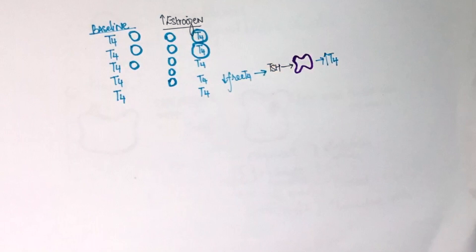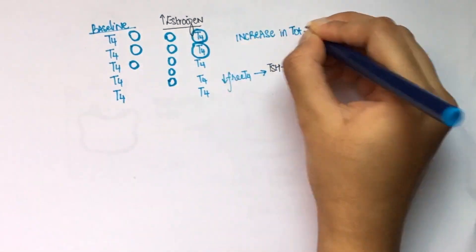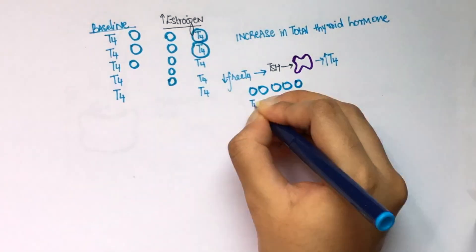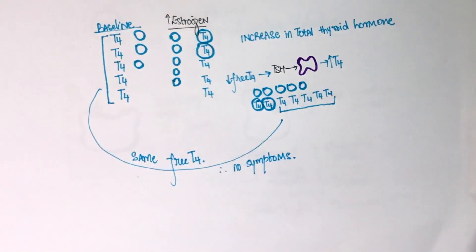This will trigger the thyroid gland to make more T4 in order to maintain the required levels of free T4. Hence, the total thyroid hormone in the body will increase but the amount of free T4 will remain the same. As mentioned before, it is only the free form that can cause symptoms of hyperthyroidism. So we can conclude that although pregnancy increases the total amount of thyroid hormone, it does not cause symptoms of hyperthyroidism.